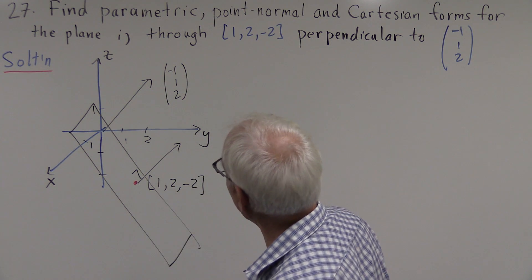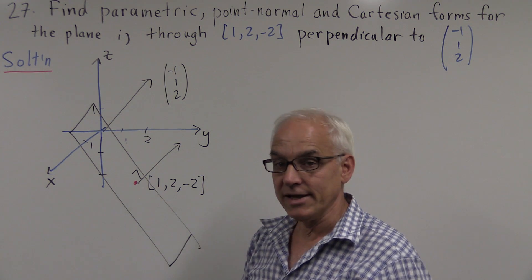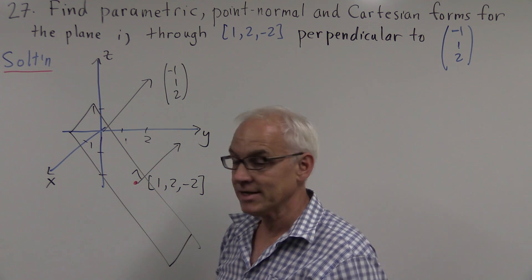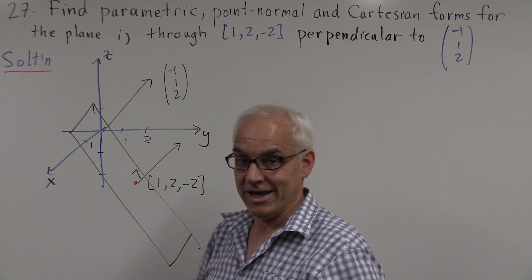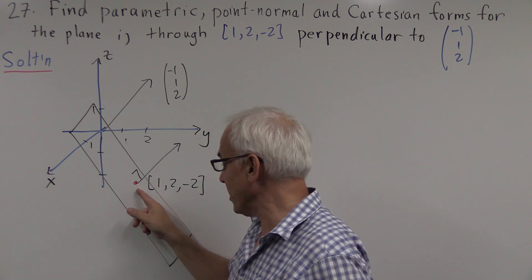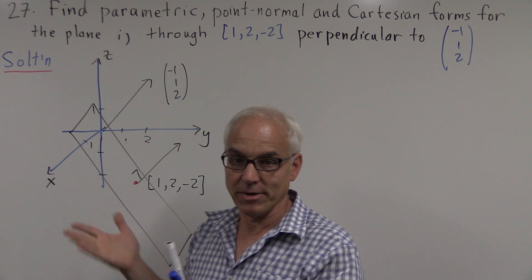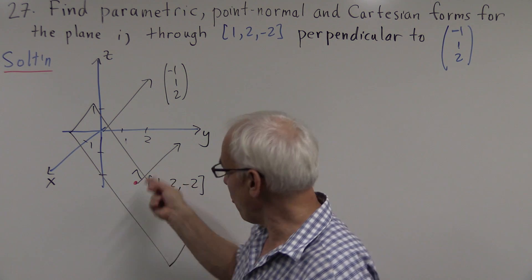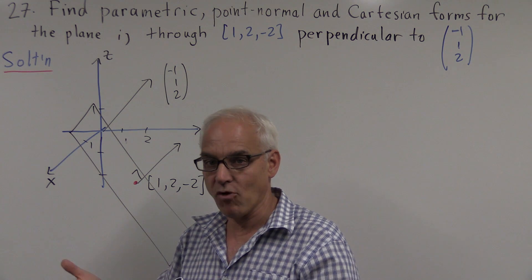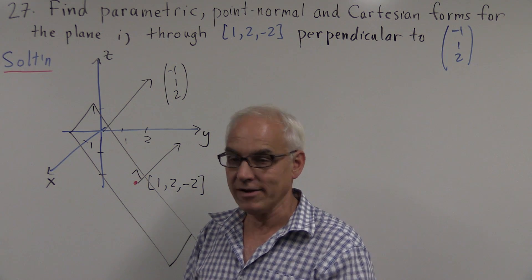Okay, so how are we going to get these various forms for it? Well, probably the simplest form is the point-normal form if we're already given a point and a normal. Normal means perpendicular direction. So we're given the point and the normal, so the point-normal form is the simplest to write down.